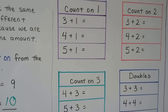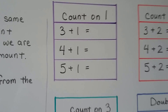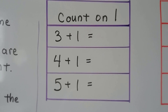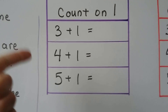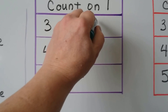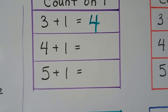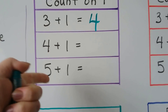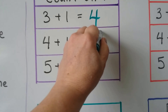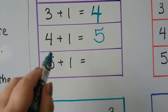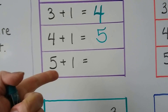We can complete these boxes. We can count on one. We start with the greater addend: three, four. Four, five. Five, six.